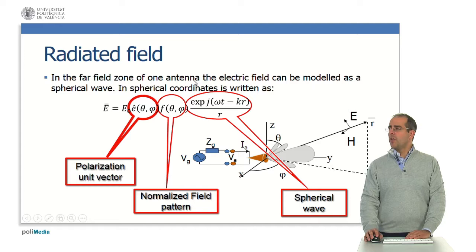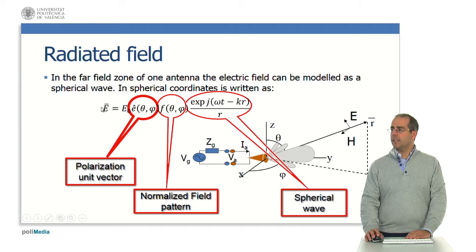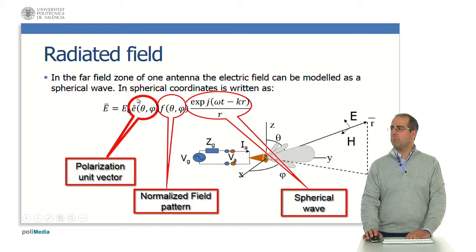In the far field zone of an antenna, the electric field can be modeled as a spherical wave. Here we have the spherical wave dependence of the electrical field. In spherical coordinates, we can write the electrical field with this definition.